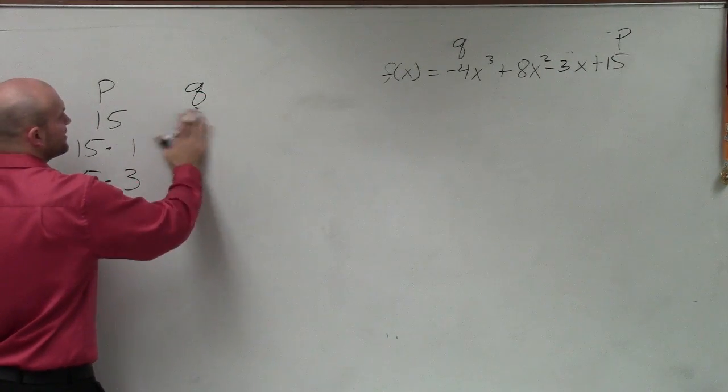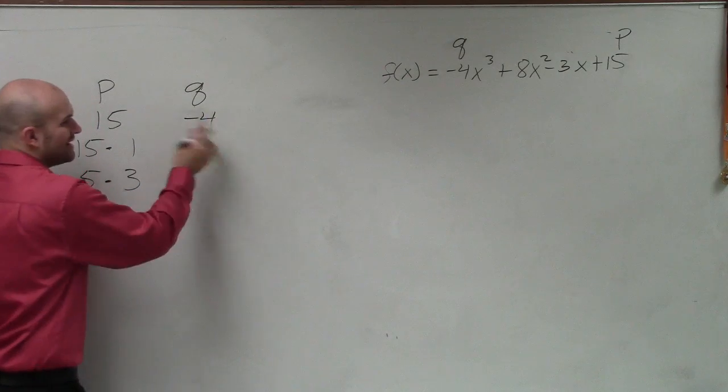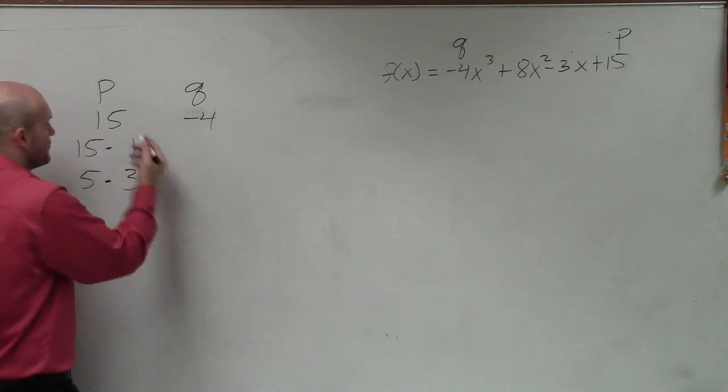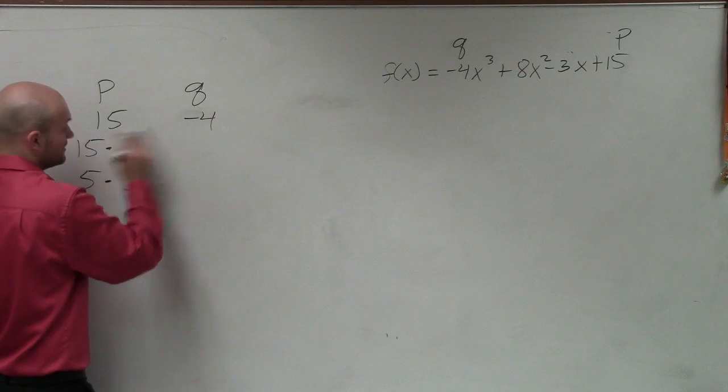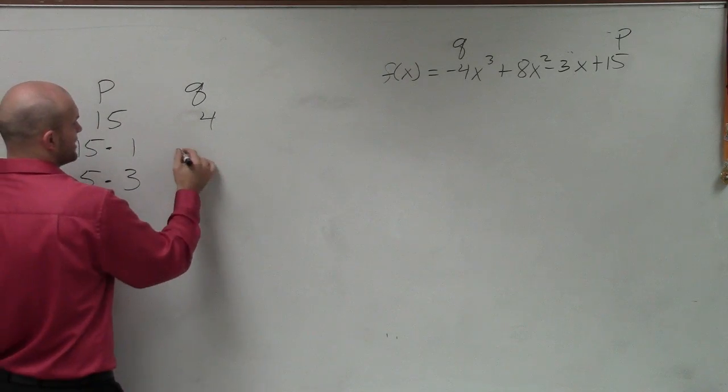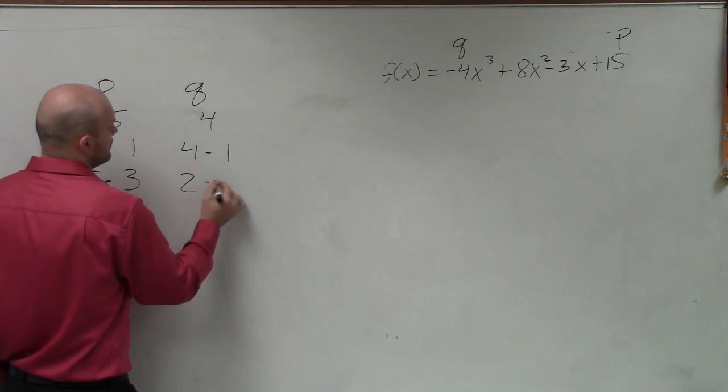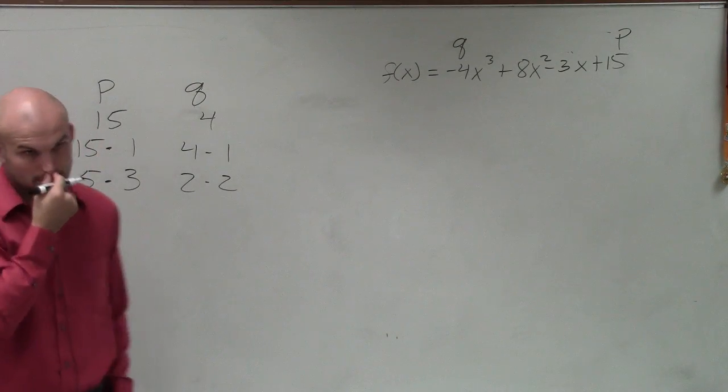q, that's going to be negative 4. Now again, it doesn't really matter if it's negative 4, positive 4, negative 15, positive 15. We just want to find the factors of it. So I could do 4 times 1 and 2 times 2, right?